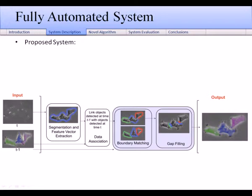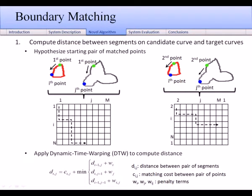In the next two slides, I will describe the novel algorithm in our system used for the boundary matching module. This module solves the many-to-one elastic partial curve matching problem. To compute the similarity between a fragment of a candidate curve and a target curve, we use dynamic time warping.